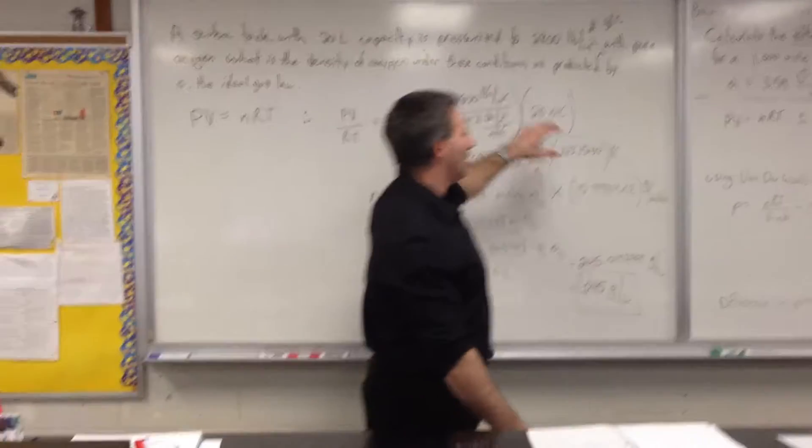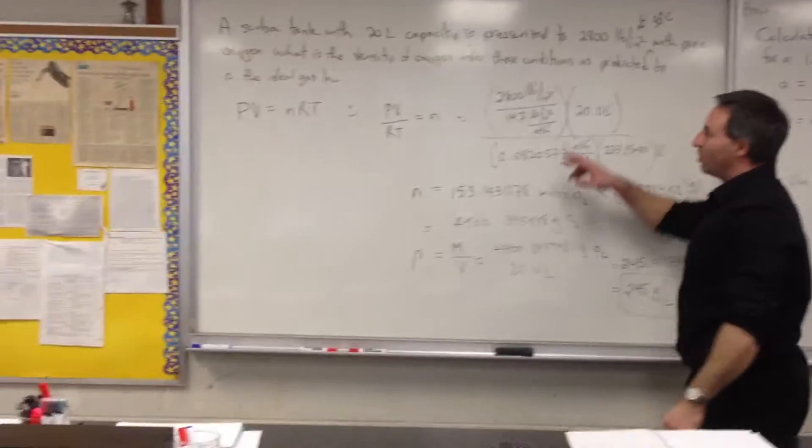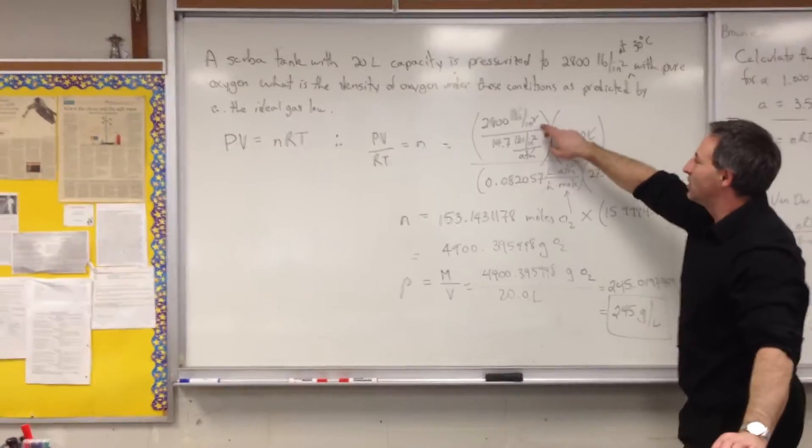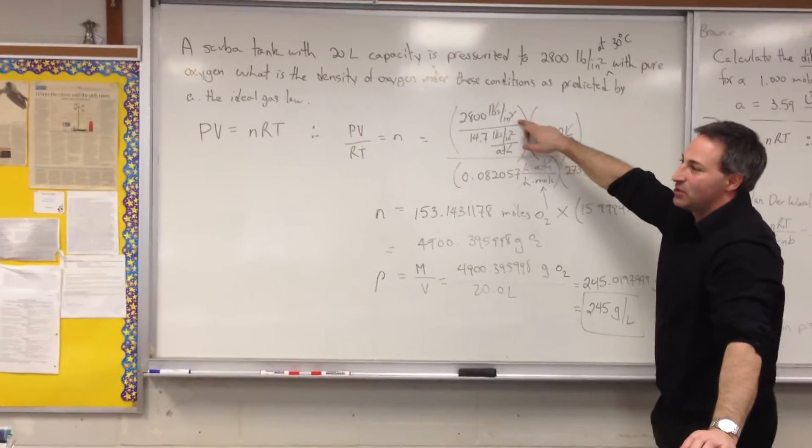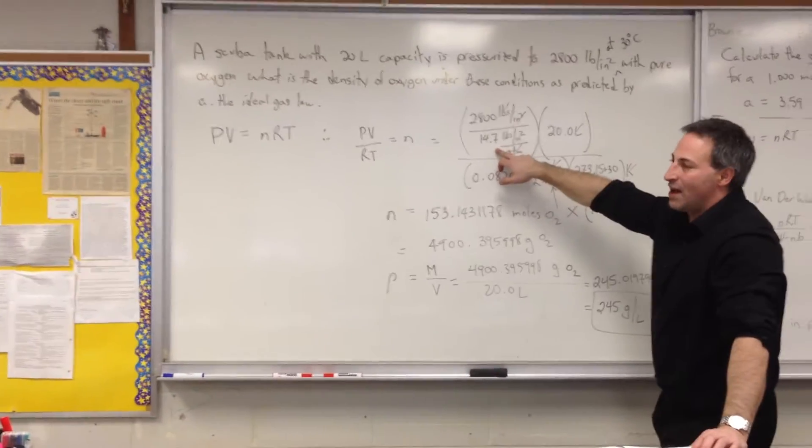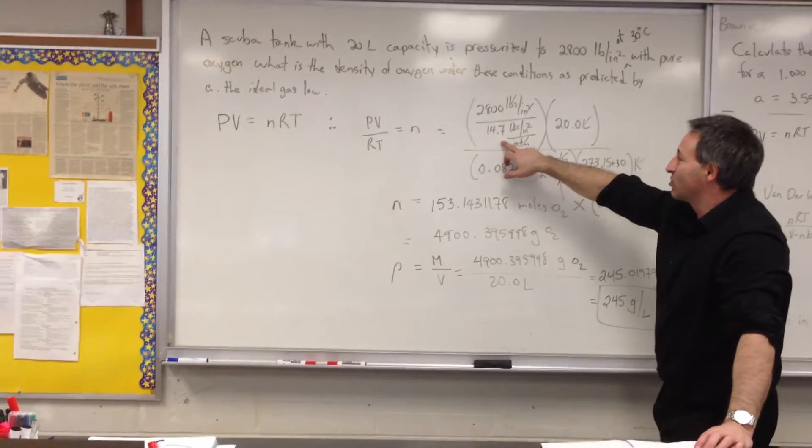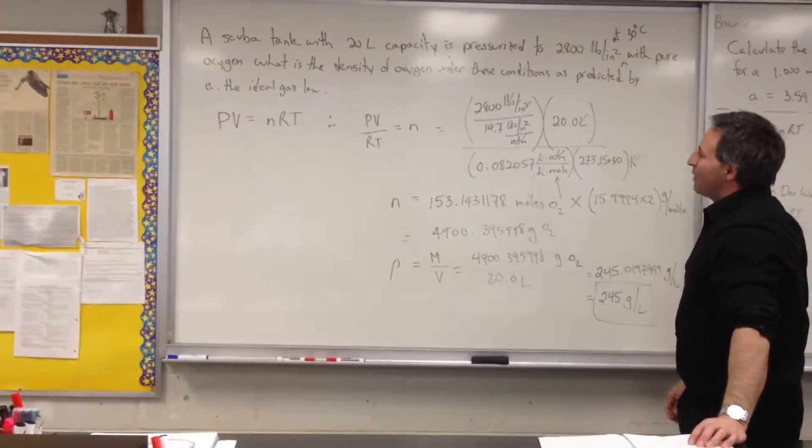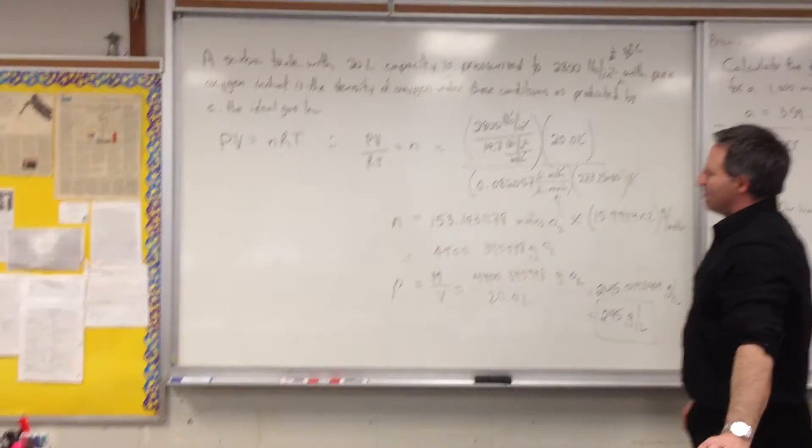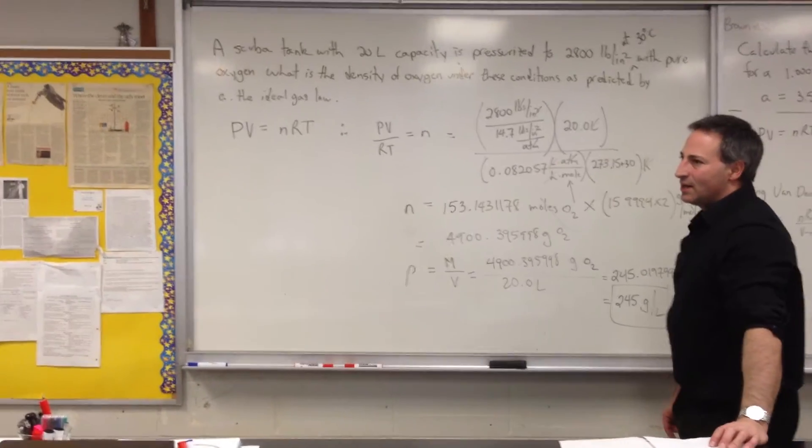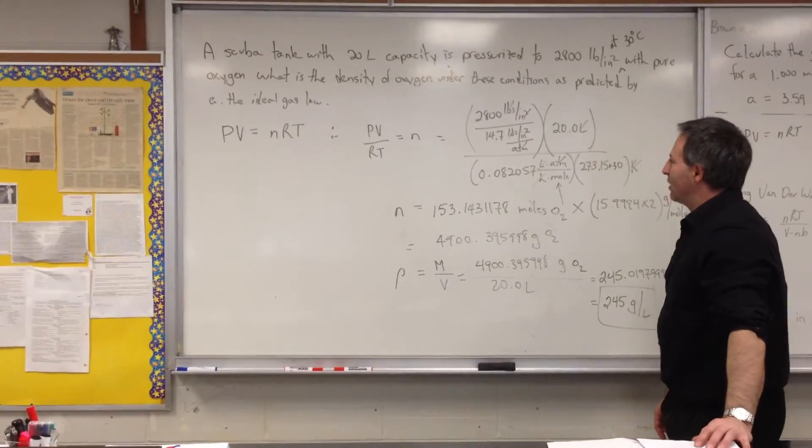We plug in all the values. There might be a little sticking point here for the conversion factor between 2,800 pounds per square inch into atmospheres. You should be aware of the fact that one atmosphere is 14.7 pounds per square inch. So 2,800 divided by 14.7 is going to give you the pressure in atmospheres. It works out to about 190, so you'll know you're on the right track if you get 190.